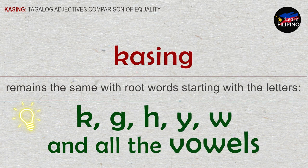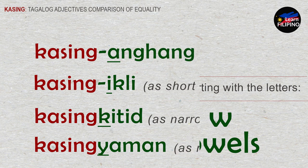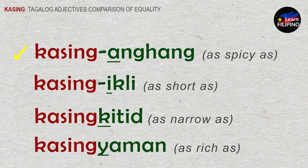For root words starting with the letters K, G, H, Y, W, and all the vowels, we use 'kasing'. For example: 'kasinganghang' — as spicy as; 'kasingikli' — as short as; 'kasingkitid' — as narrow as; 'kasingyaman' — as rich as.